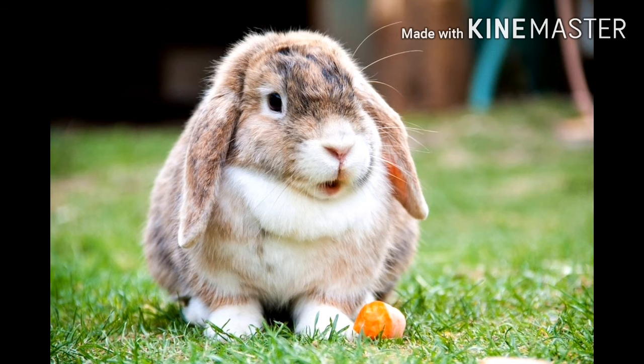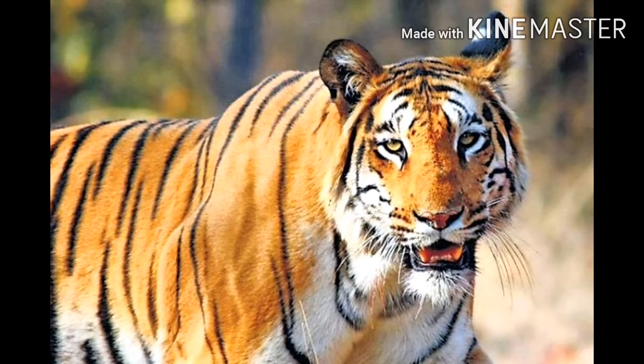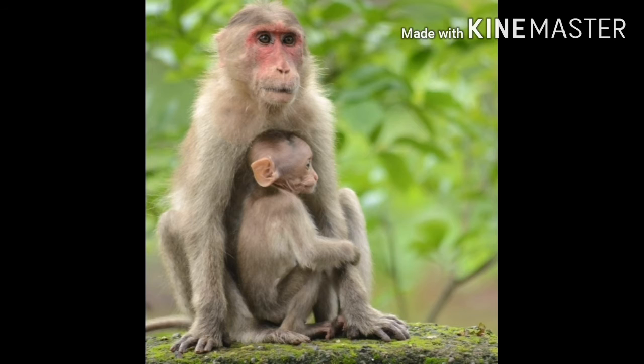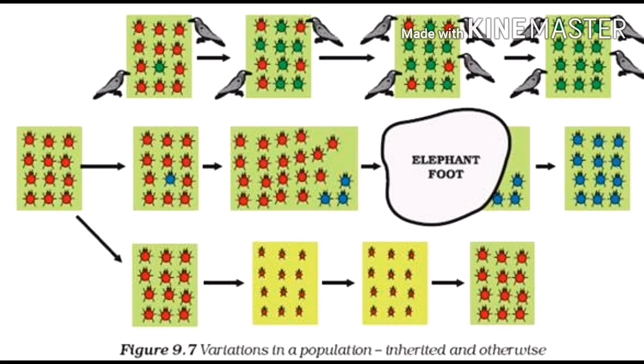Evolution occurs due to interaction of the following forces. First is variations in the members of population. Second is natural selection that favors accumulation of advantageous variations in population. And third is chance selection or genetic drift which can retain characters of no survival value in small populations. Let's study about these in detail.